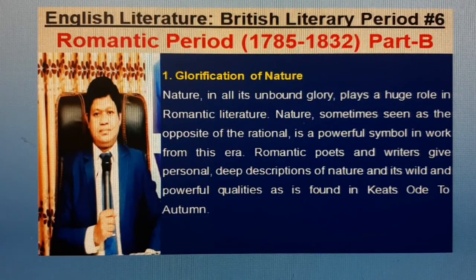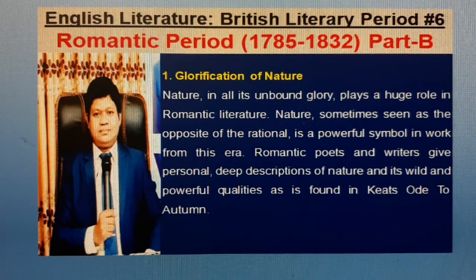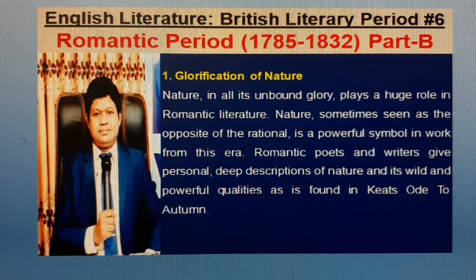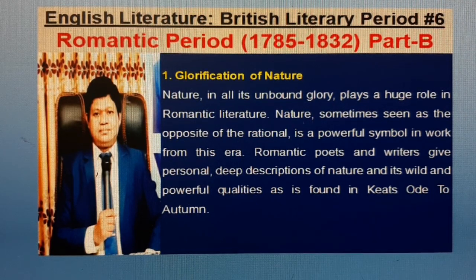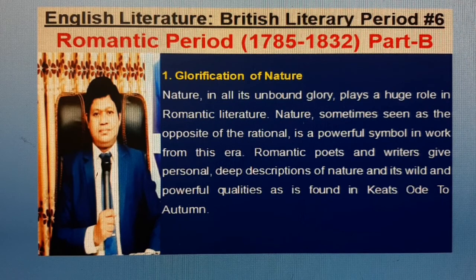I am going to discuss about each of them in short. 1. Glorification of nature. Nature in all its unbound glory plays a huge role in Romantic Literature. Nature, sometimes seen as the opposite of the rational, is a powerful symbol in work from this era. Romantic poets and writers give personal, deep descriptions of nature and its wild and powerful qualities, as is found in Keats' 'Ode to Autumn', Wordsworth's 'Tintern Abbey', and 'Immortality Odes'.